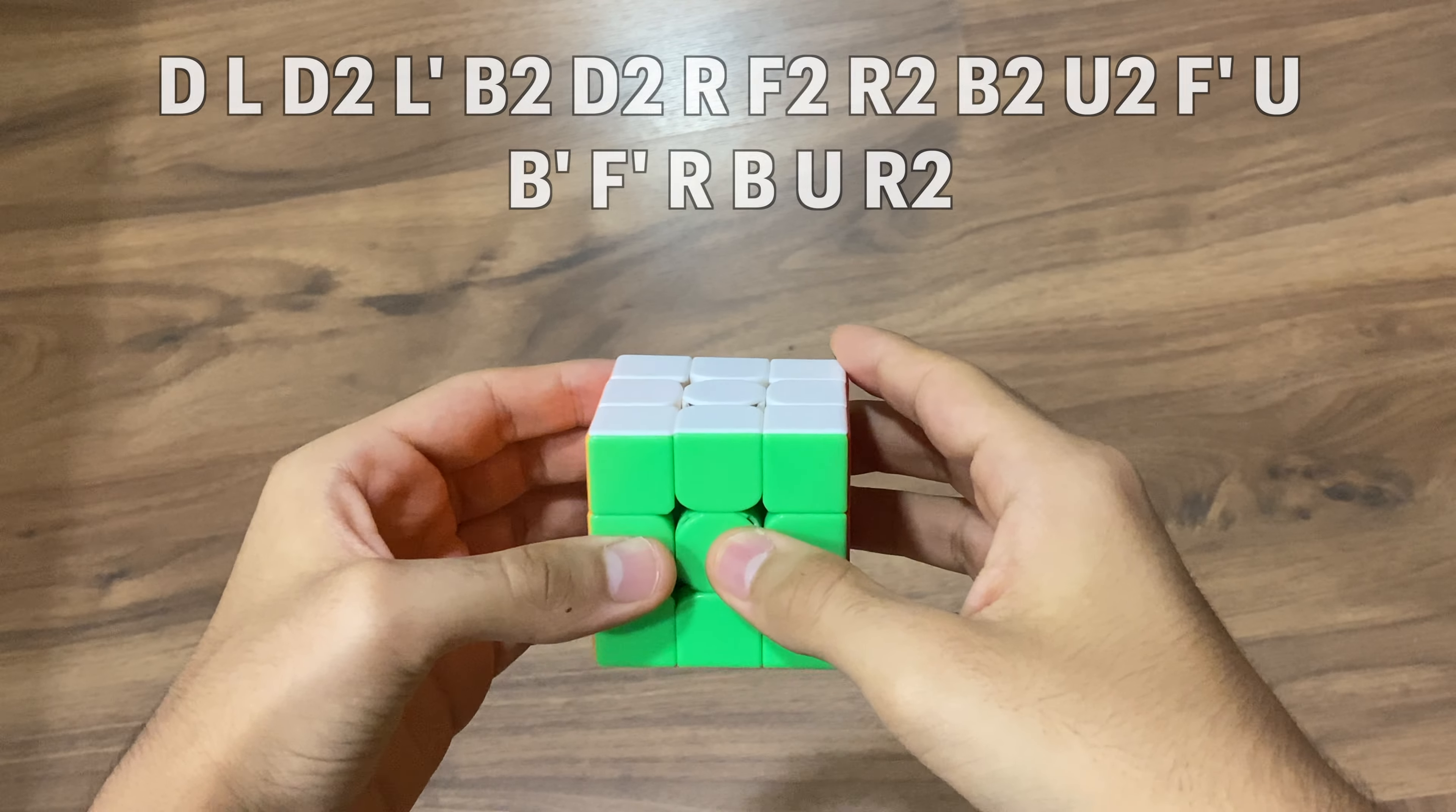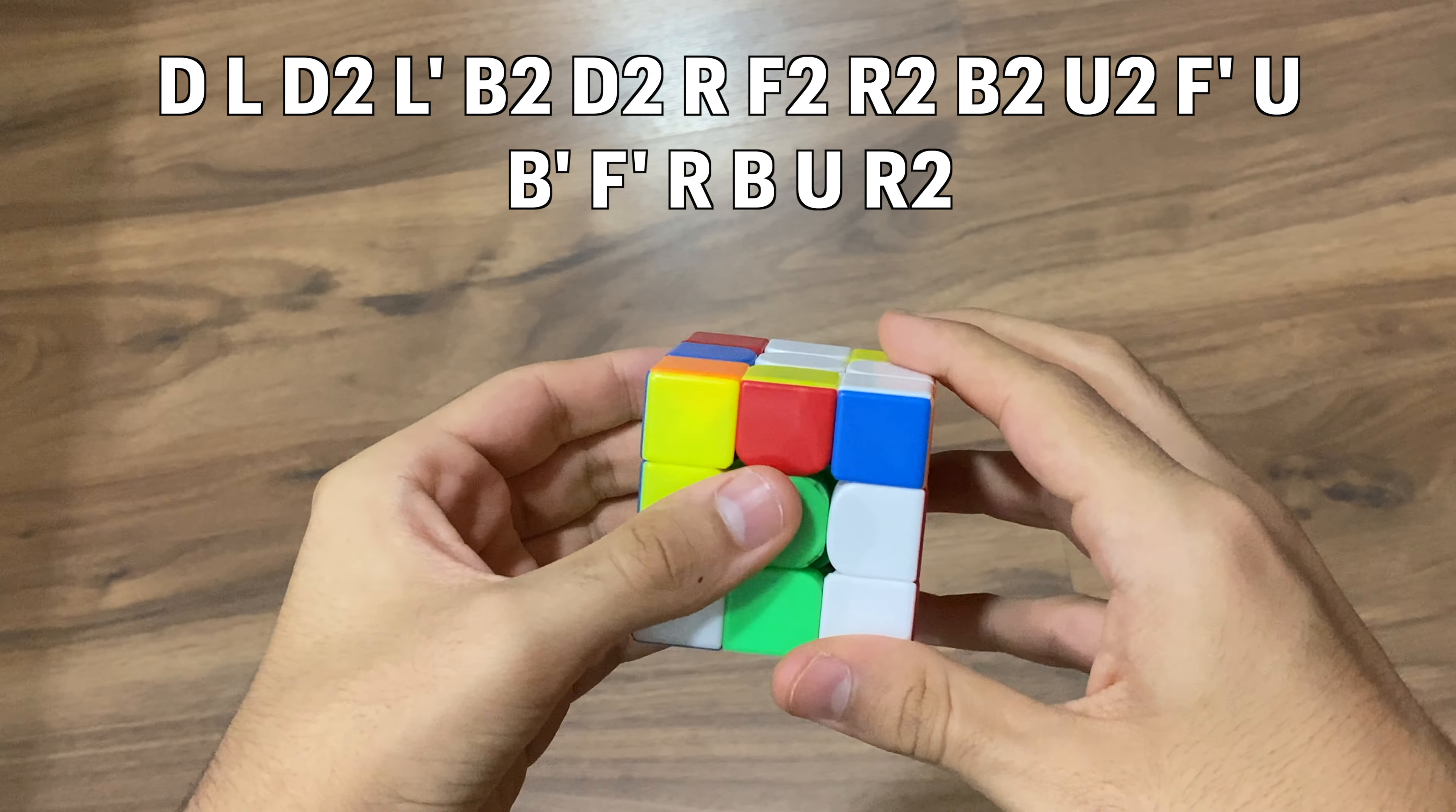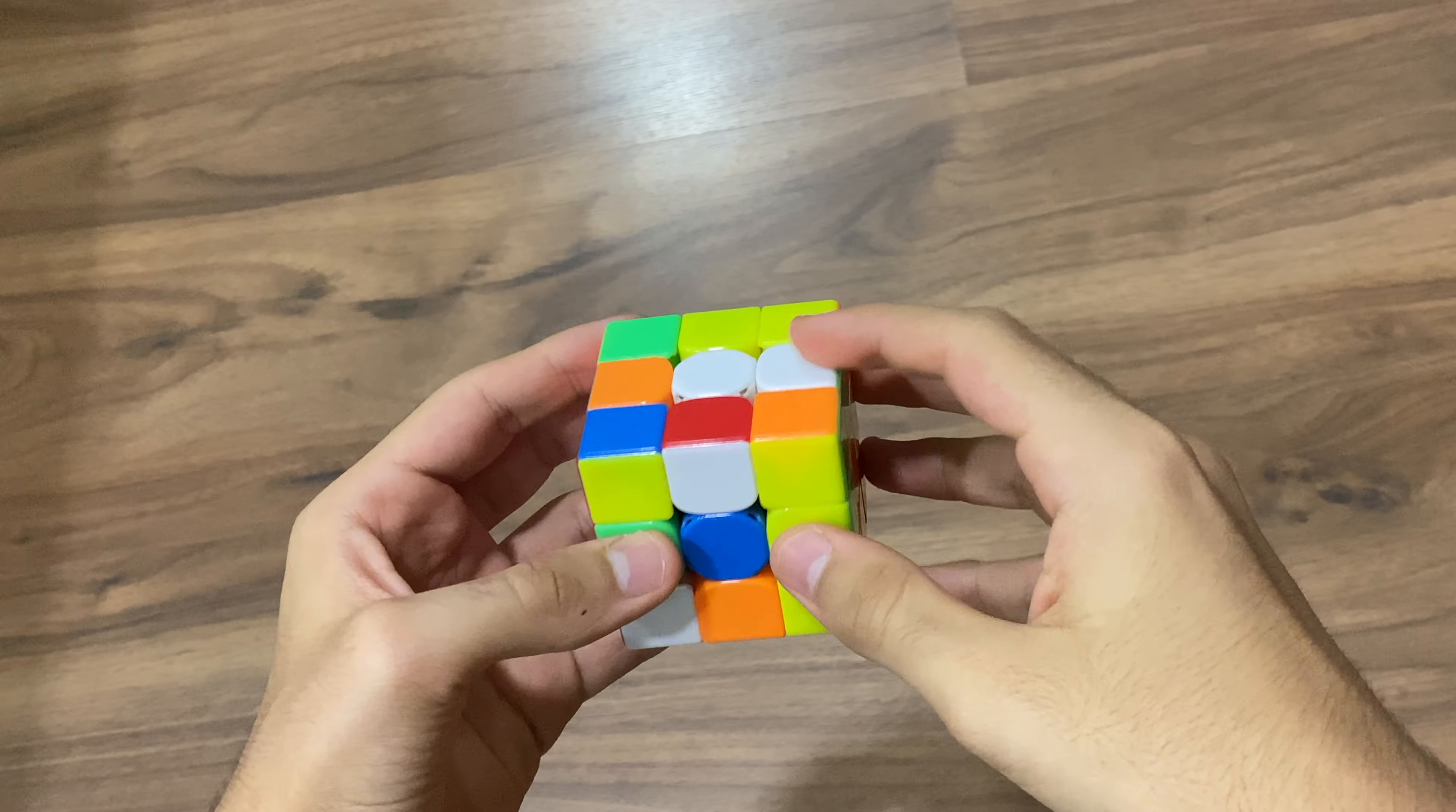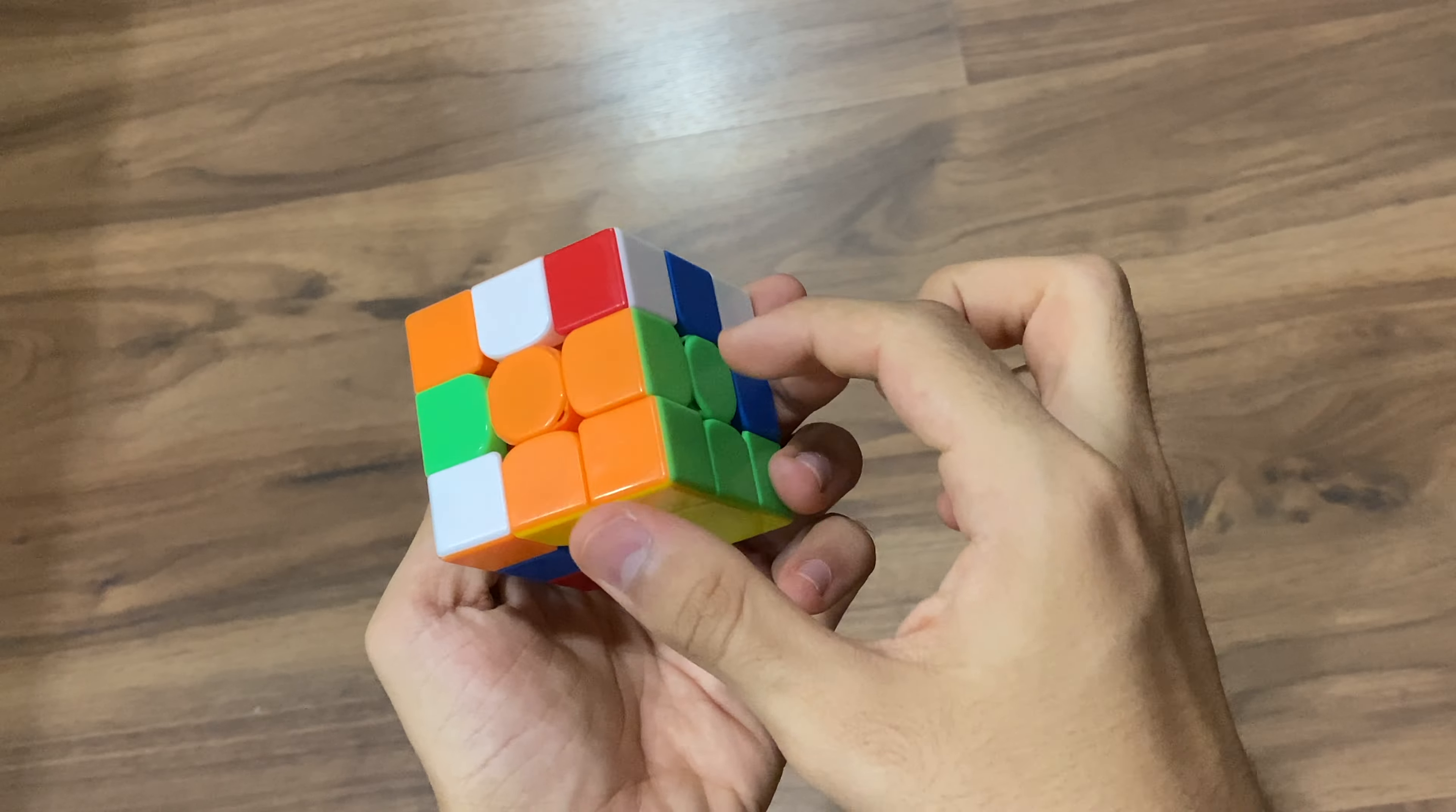Without any further ado, let's get right into reconstructing it. Here's the scramble at the top of the screen. Right off the bat you can see that this is an insanely easy scramble. So once you insert this corner, this edge gets solved.